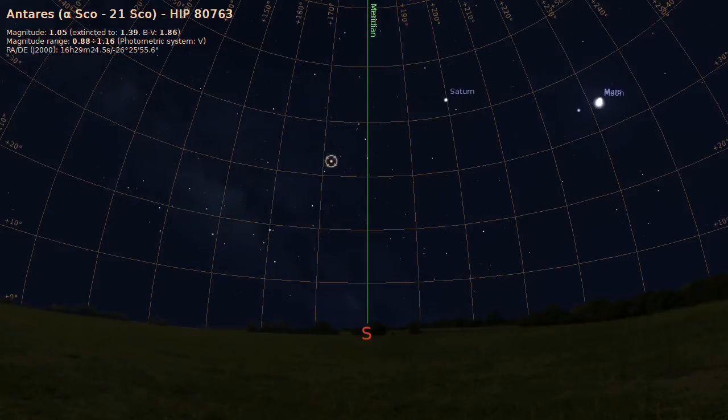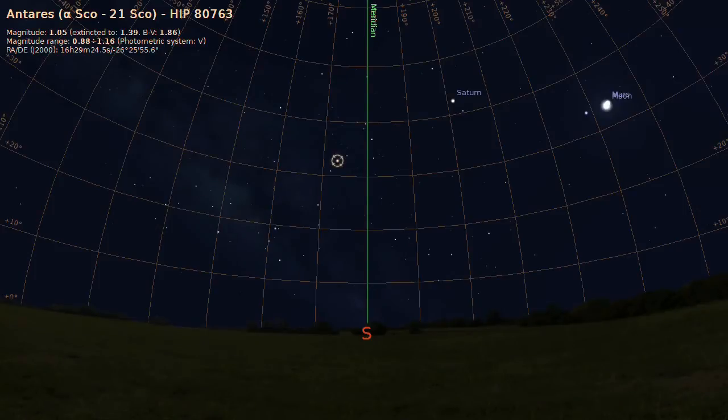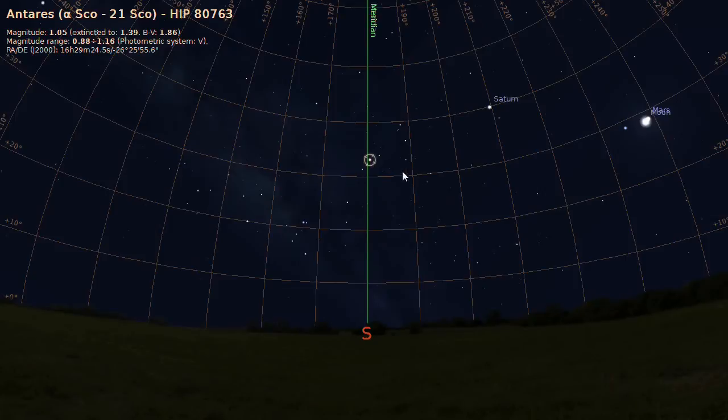A star or other object on the celestial sphere culminates when it crosses the meridian at the highest point above the horizon. That's usually the best time to observe an object because it's at the highest point above the horizon, which means you have to look through a lot less dust and moisture in the Earth's atmosphere.